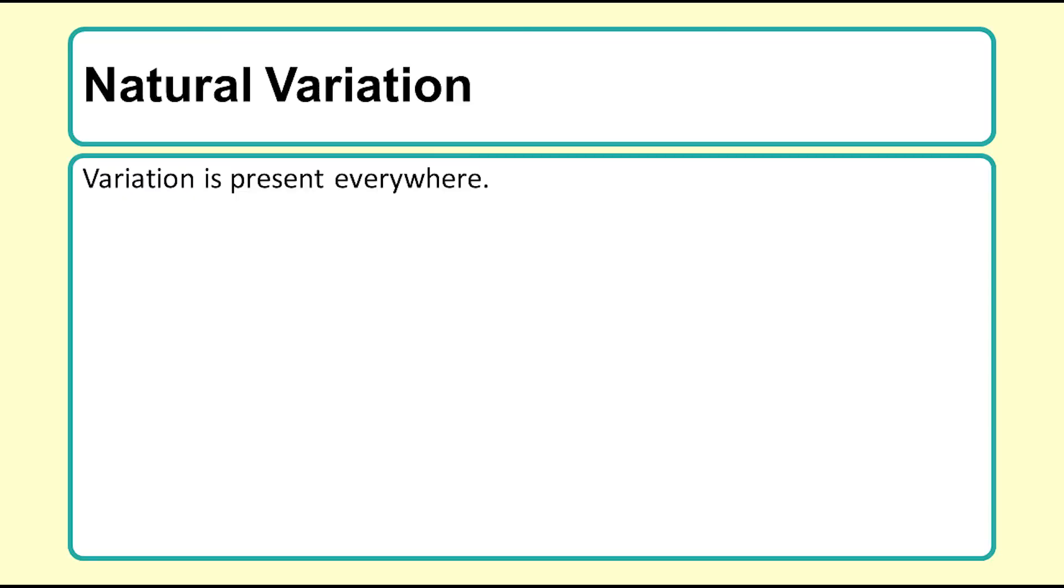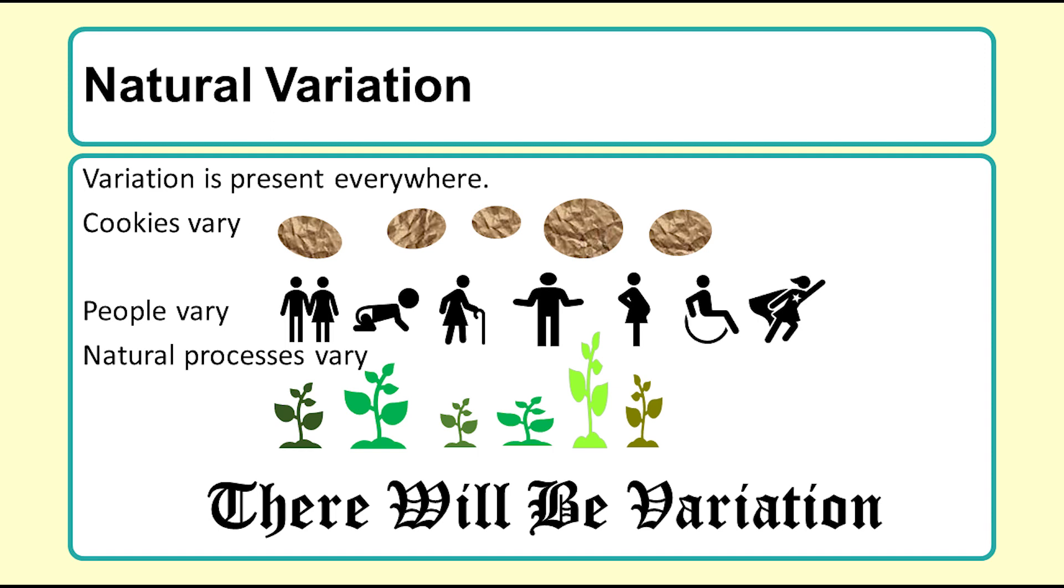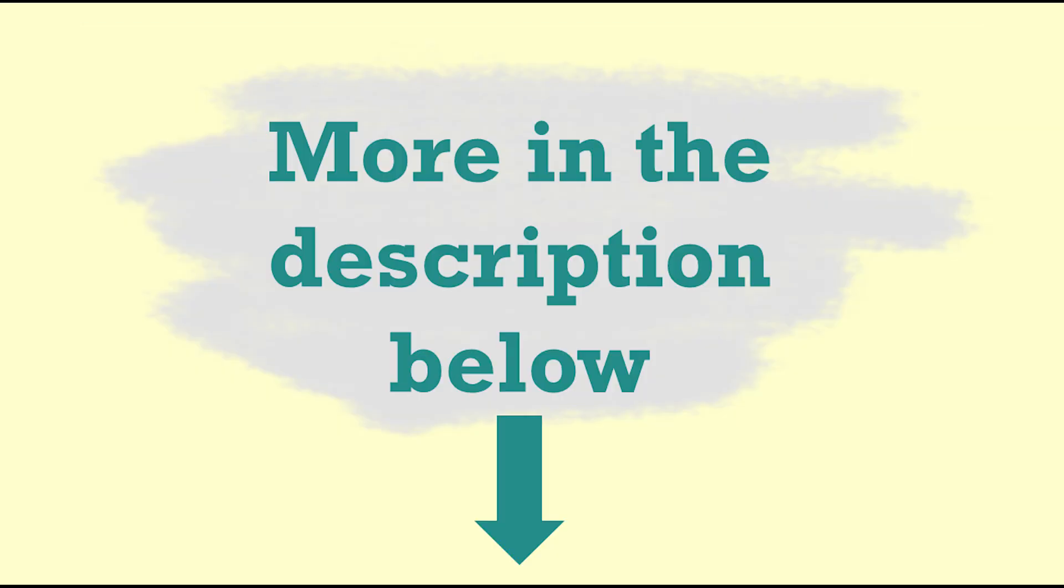This illustrates the important concept of natural variation. Because there is natural variation in the size of the cookie, we need to cook more than one cookie of each type. If there were no natural variation, it would be sufficient to cook one cookie with each amount of butter and that would tell us the result. Natural variation is present everywhere. Cookies vary, people vary, and natural processes vary. There will be variation.